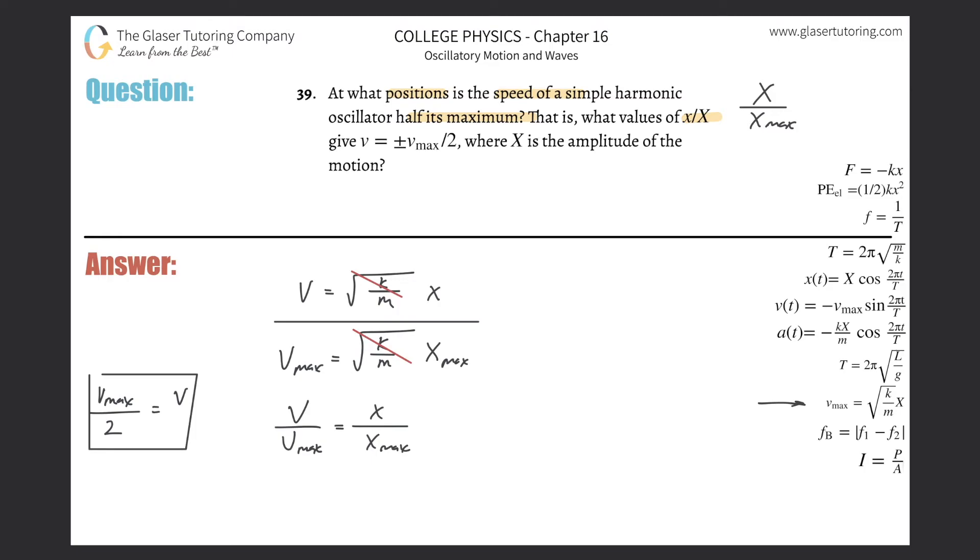Now notice I have this variable little v not-max in terms of v_max. So now what I can do is I can substitute this for v in my formula. When we do that, we're going to get v_max all over two times v_max, and that's equal to x not-max over x_max. And look, they cancel.